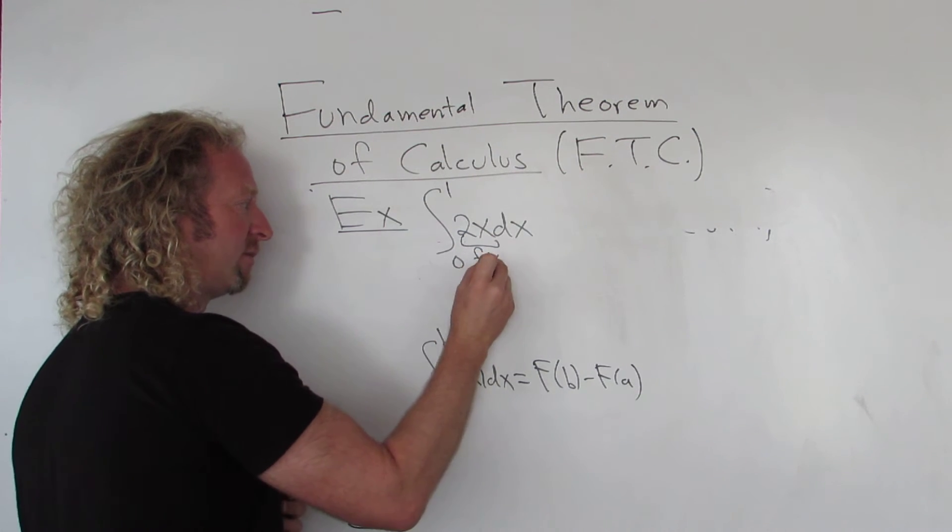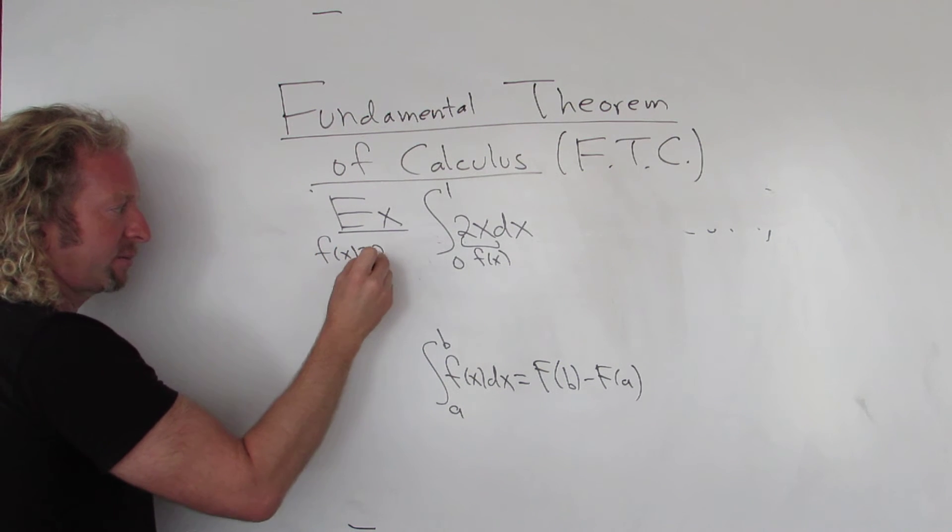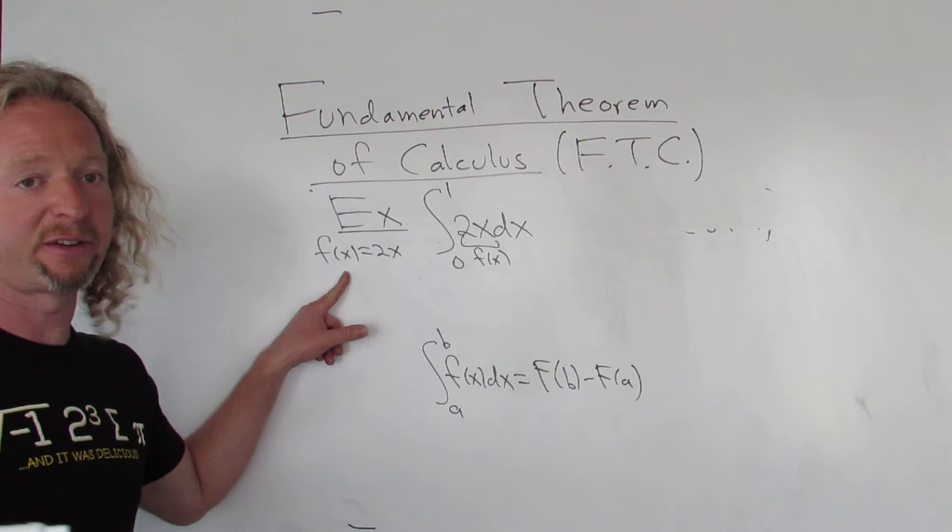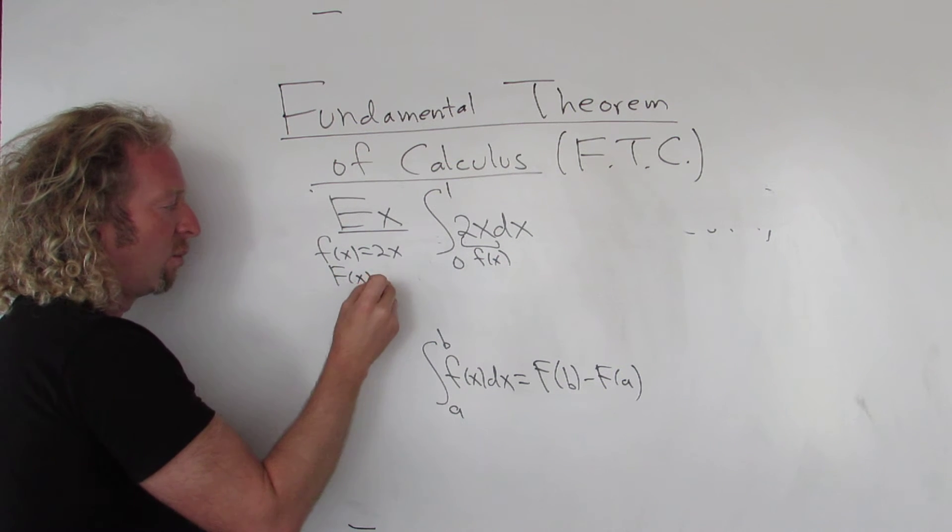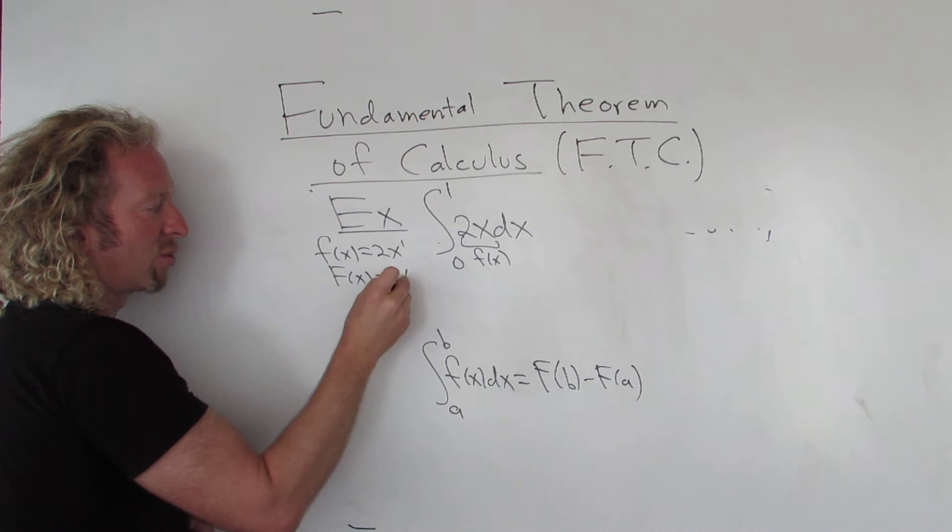So I'm going to call this little f. So little f of x is equal to 2x. So we have an antiderivative of little f. So you would just integrate it. When you integrate this, you get 2 and then you add one, so you get 2x squared over 2.